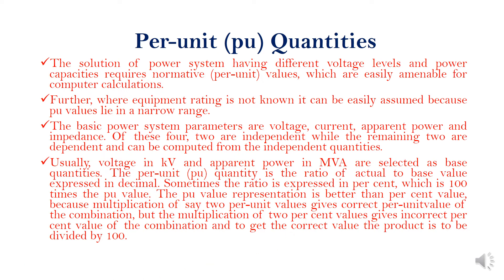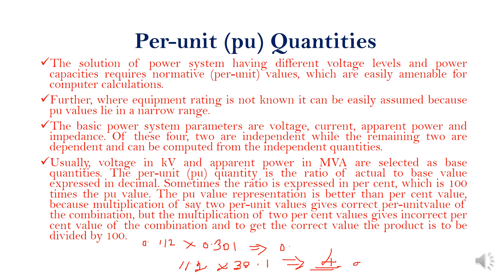For example, if you multiply per-unit values such as 0.112 by 0.301, you directly get another per-unit value. But if you convert these to percentage values — multiplying by 100 — and then multiply them together, you get a four-digit value which is the wrong answer. To get the actual value from the percentage product, you would need to divide by 100. So this is the problem with using percentage values.